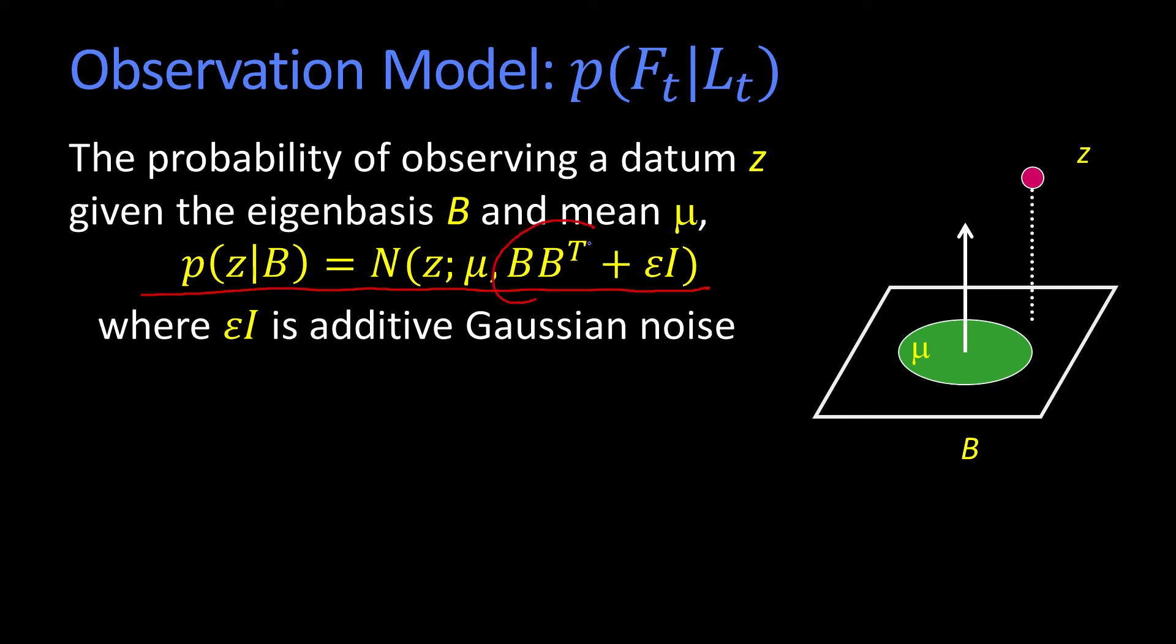where the idea is that this BB transpose, that's the covariance matrix sort of within face space. And then we're going to just say some epsilon I, I is an identity matrix, epsilon is some small number. So things get to come out of that plane a little bit. So faces are mostly in face space and they move away a little bit.